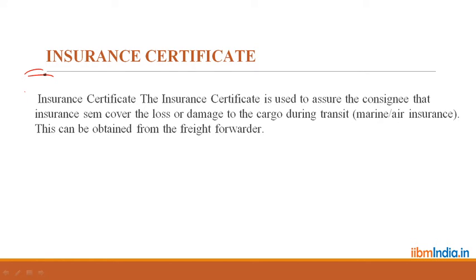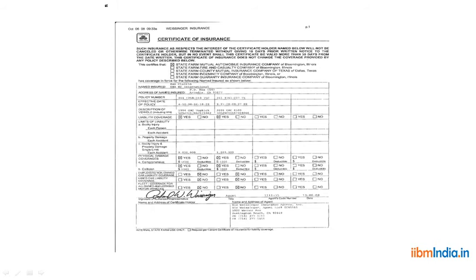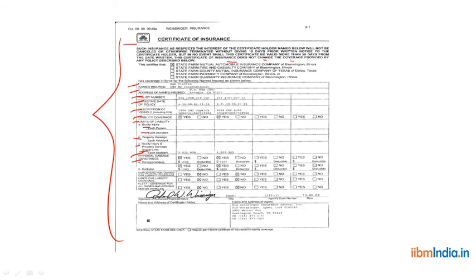The insurance certificate is used to assure the consignee that insurance will cover losses or damage to the cargo during transit — marine or air insurance. This can be obtained from a freight forwarder. The certificate of insurance shows: name of insured, address, policy number, effective date, description of vehicle or cargo, liability coverage limits — personal injury, property damage — and physical damage coverage. Insurance plays a very vital role in covering the risk during transit.